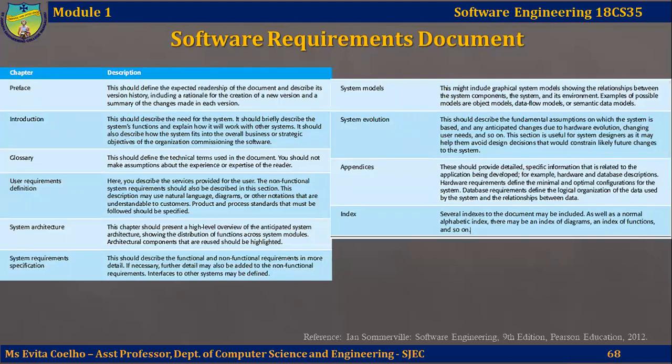The table on this slide shows one possible organization of the requirements document, based on the IEEE standard for requirements documents. This standard is a generic standard that can be adapted and modified to specific cases. The SRS begins with a preface which defines the expected readership of the document, describes the version history, the rationale for creating every version, a summary of changes made in each version, and so on. The next chapter is the introduction, which describes the need for developing the system, the system functions, how the system interacts with other systems, and how the system fits into the overall business.